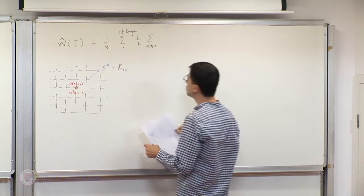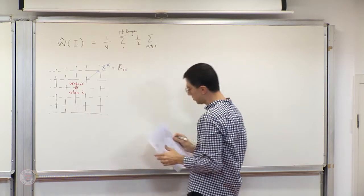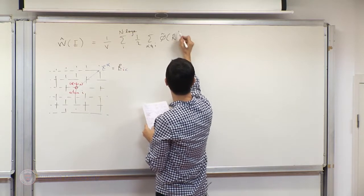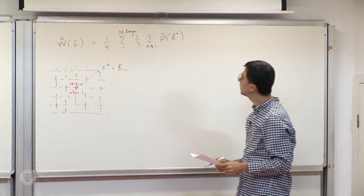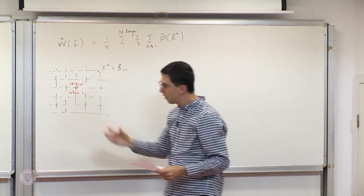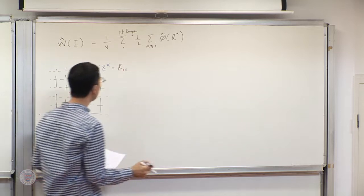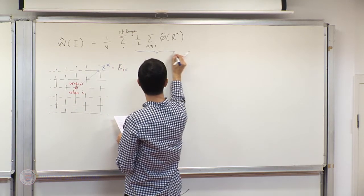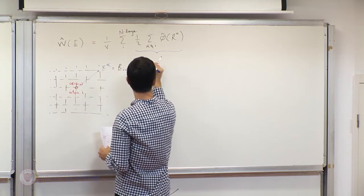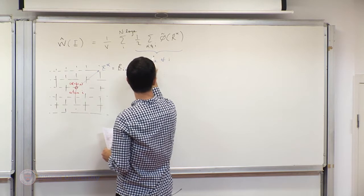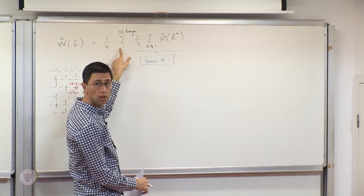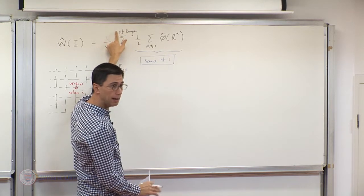With this simplified notation, I write the sum over i, where alpha is not equal to i, with evaluation of the pair potentials as phi-tilde of r_alpha. Since the picture every atom sees is essentially the same, what appears in the sum over i is the same for every atom. So I can simply multiply by n instead of carrying out the sum.